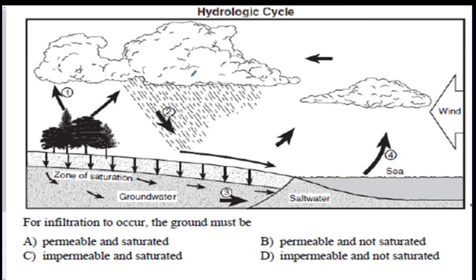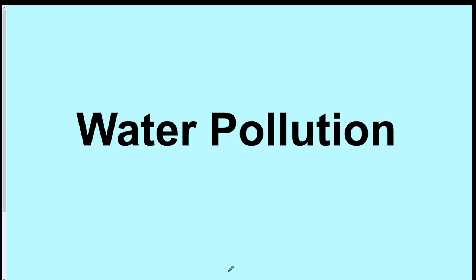Next question. For infiltration to occur, that is the water sinking through the ground, the ground must be what? Well, impermeable means that water can't get through. So that's out. If it's saturated, that means it's full. So obviously you're not going to have infiltration occur if the ground is already full. Infiltration is when water seeps through the ground. If it's full, it's not going to be able to go. So you want permeable and not saturated. B is the best answer.